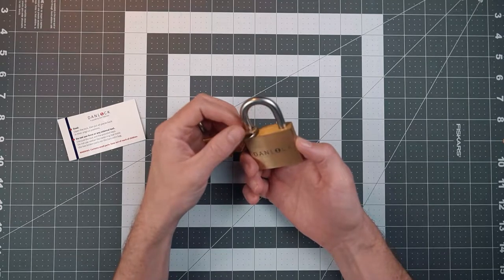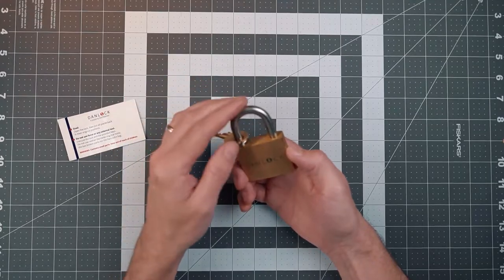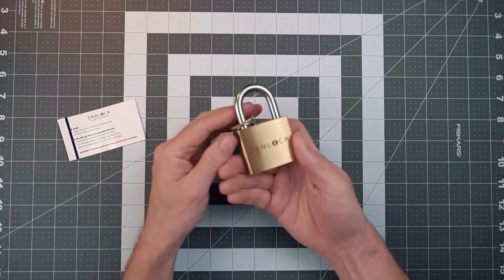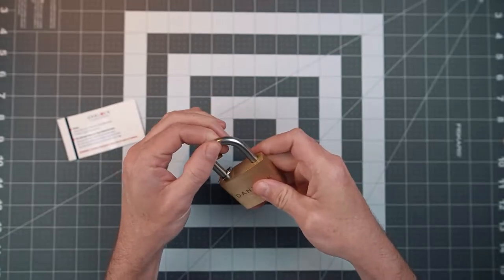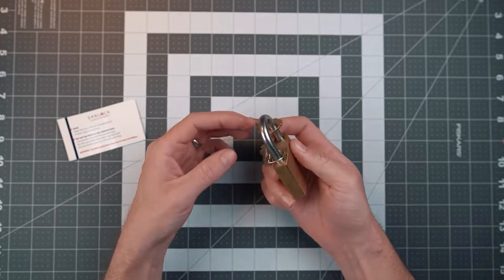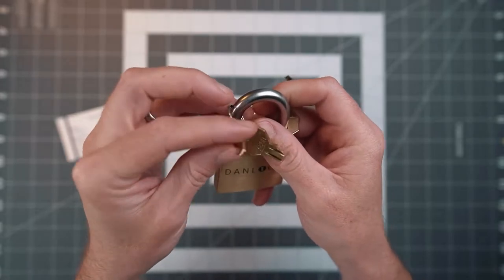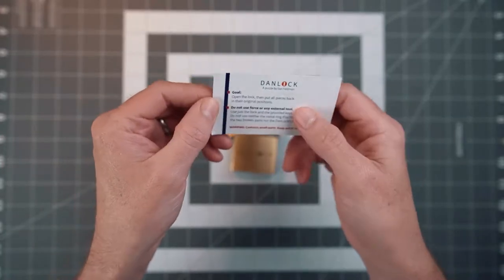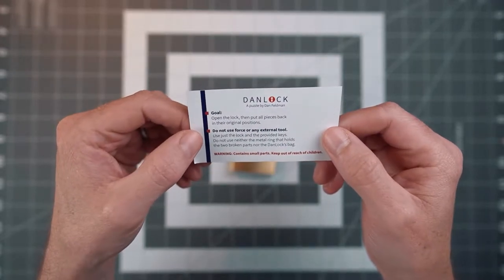I've done a couple of Will Strijbos puzzles, those are popular, but then you've got the Dan Lock as well. I've been excited about this one. As you can see, it's just looks like a normal old padlock. It's got the keyhole, it's got a locked shackle, and then you've got a key stuck on the shackle, and then there's a little key ring with these two parts of a broken key. With that, I guess read the card that came with it. So open the lock and then put all the pieces back together, pretty standard.